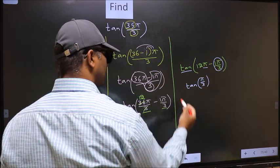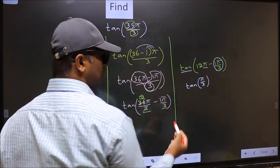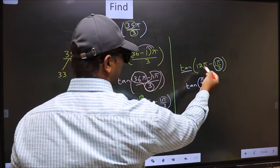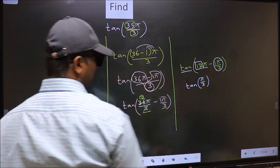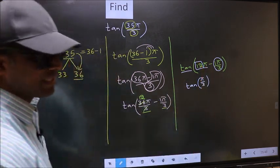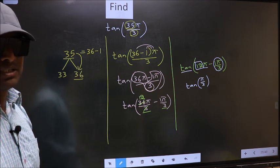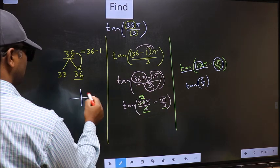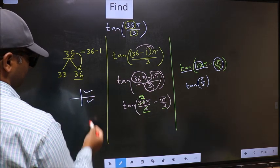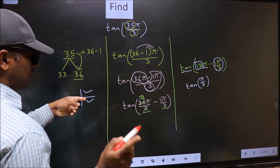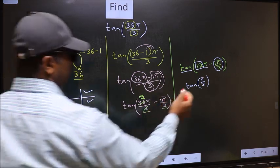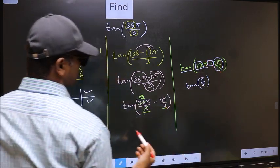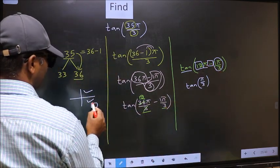Now the question is, will we get here plus or minus? To answer that, we should look at the number before π, which is 12. And 12 is an even number. And all the even multiples of π lie either in the first or in the fourth quadrant. Now to select the quadrant, we should look at this symbol. Here we have negative. That means angle lies in the fourth quadrant.